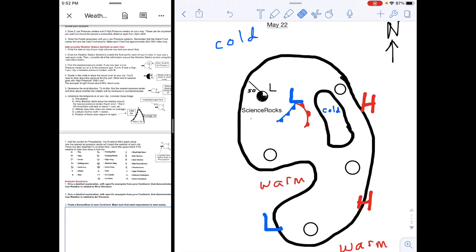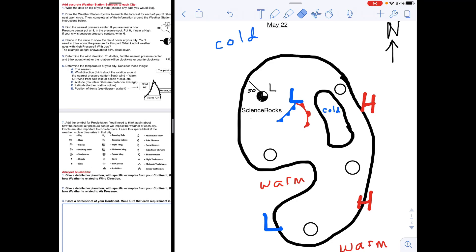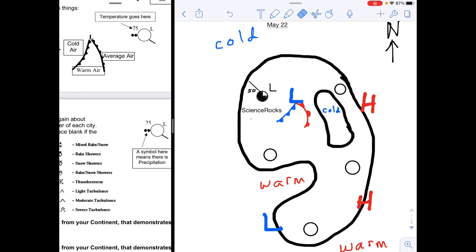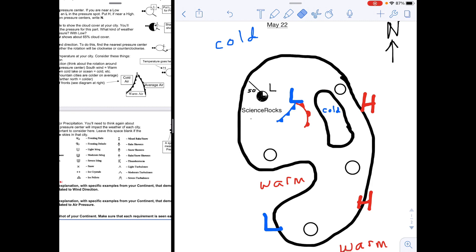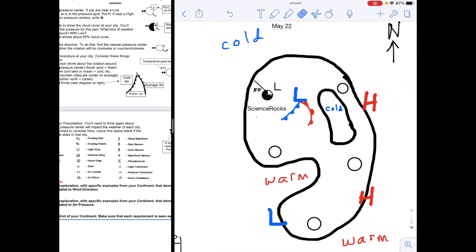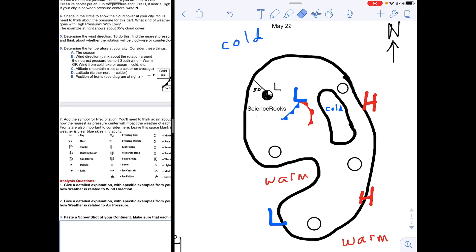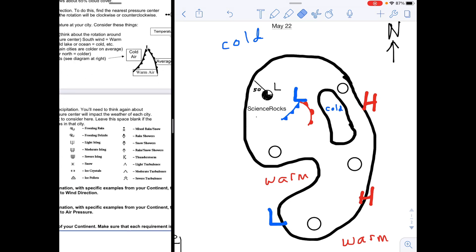Now the next part, step seven, is to add the symbol for precipitation. On this, the symbol of course goes underneath the temperature number. With a low pressure system nearby and cold temperatures affecting my city of Science Rocks, also if I look at the cloud cover on it being quite overcast, then it's likely not going to be snow or freezing rain, right, because it's 50 degrees. But I may well have rain and I may well have thunderstorms, so I could put two symbols.